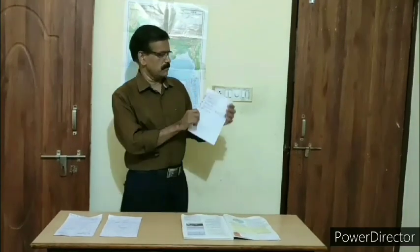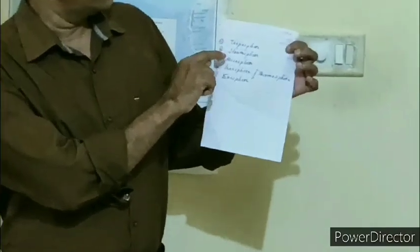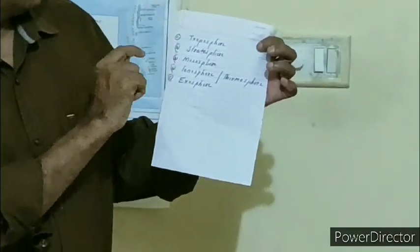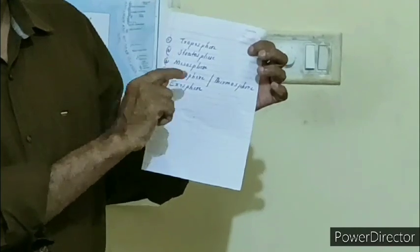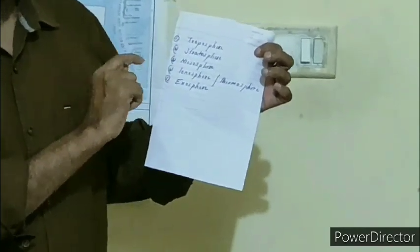Now we move to the structure of atmosphere. The atmosphere consists of five layers: troposphere, stratosphere, mesosphere, ionosphere or thermosphere, and exosphere.